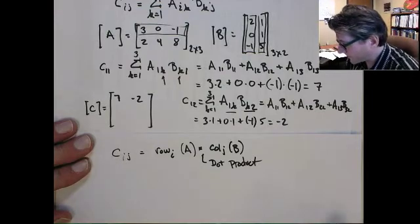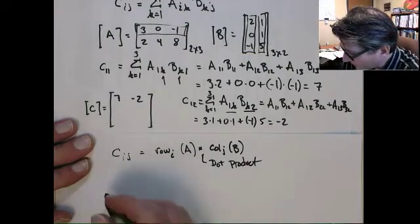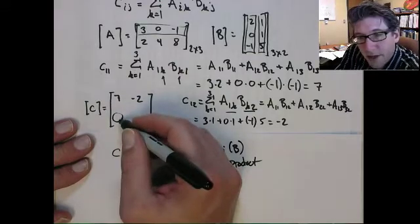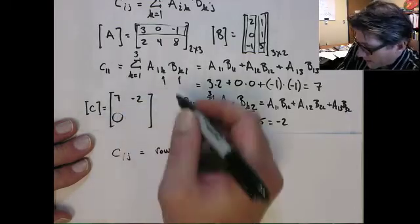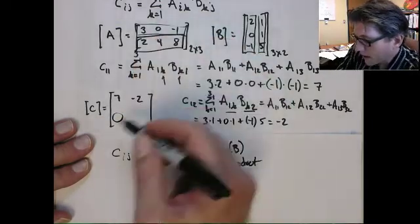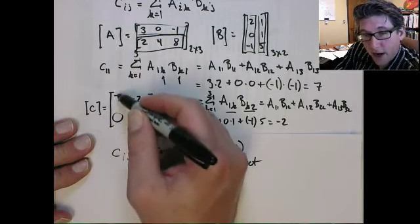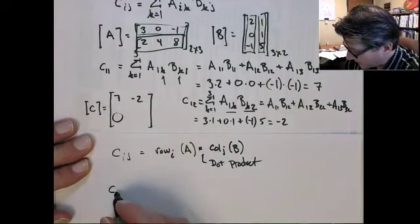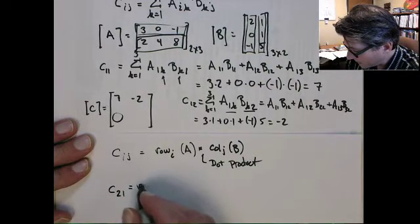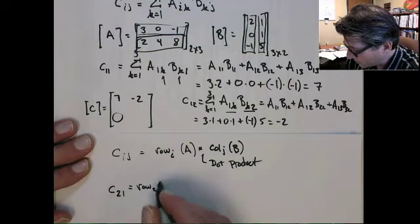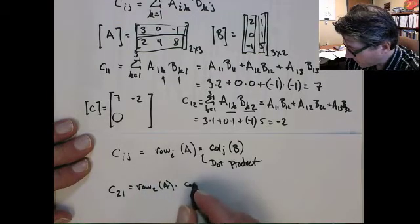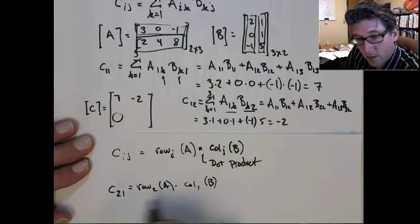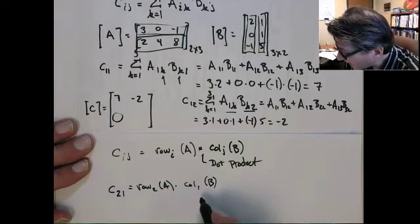So that's the easier way to think of it, and that's the way it always goes. So if you look at it graphically, to fill out these other ones, like this one, this would be the second row of A dotted with the first column of B. So C21 would be row two of A dotted with column one of B, right? The two goes with the first index, and the one with the second index.